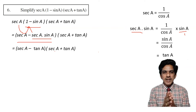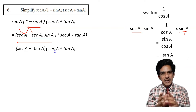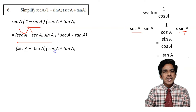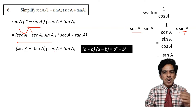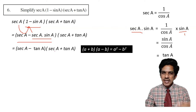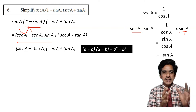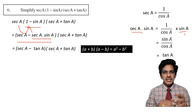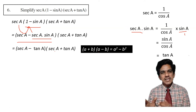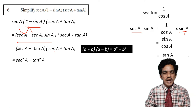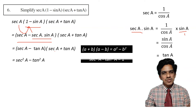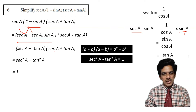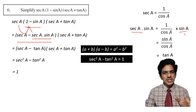So the expression becomes secant a minus tan a into secant a plus tan a. This is like a minus b into a plus b, which equals a square minus b square. Applying that formula gives secant square a minus tan square a. From trigonometric identities, secant square a minus tan square a equals 1. So the value of this whole expression is equal to 1.